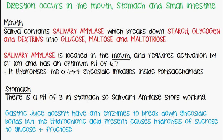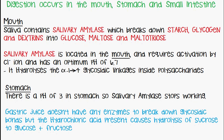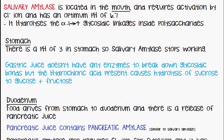When food moves into the stomach, the pH is 3, so salivary amylase stops working. The gastric juice itself doesn't contain any enzymes to break down glycosidic bonds. However, the hydrochloric acid present in the gastric juice causes the hydrolysis of sucrose to glucose and fructose. That's digestion in the stomach.